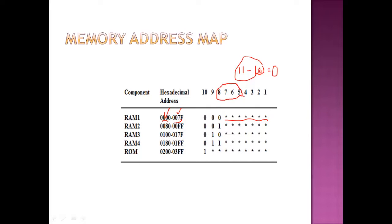For the maximum range, we see 0 1 1 1 1 — what will be the value? 7. And if it is 1 1 1 1, what will be the value? F. So we have found that RAM chip 1 has an address range of 0000 to 007F. Similarly, we can find the range for RAM chip 2, 3, and 4.